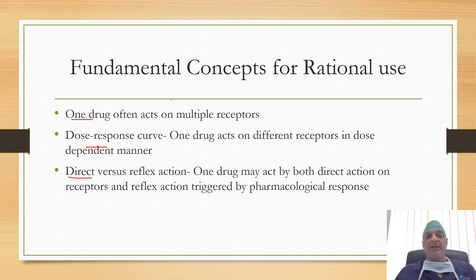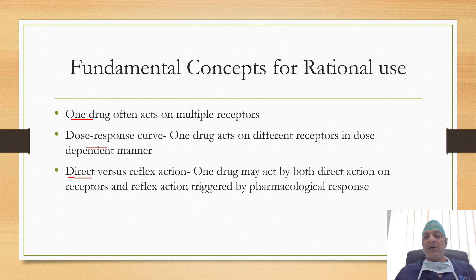Direct versus reflex action: one drug may act by both direct action on receptors and reflex action triggered by the pharmacological response. Like in the case of norepinephrine — by alpha-1 action it induces vasoconstriction and increases mean arterial pressure; by beta-1 action it increases heart rate and causes tachycardia. But by reflex action, since blood pressure is increased, it causes bradycardia, so the ultimate effect on the heart rate remains unchanged.